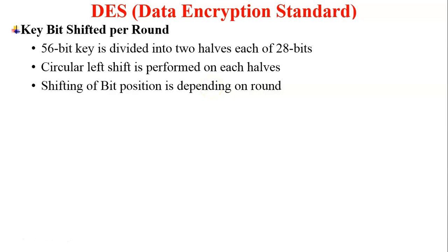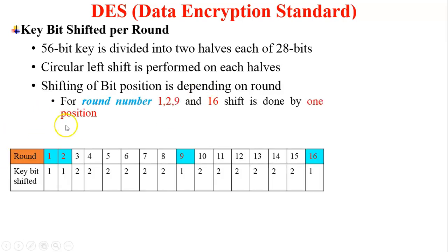Looking at the table of rounds and key bits shifted: for round numbers 1, 2, 9, and 16, the shift is done by 1 position — one bit left shift. For the remaining rounds — 3, 4, 5, 6, 7, 8, and up to 15 — it performs a 2-bit left shift. This is the key bit shifted per round.